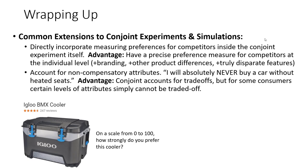Another common extension is accounting for what are called non-compensatory attributes. A common example: 'I will never buy a car without heated seats.' If somebody receives a non-heated seat version of the car, it literally doesn't matter what other combination of features is presented — they are simply not willing to make a trade-off. Non-compensatory attributes exist throughout the marketing space, and conjoint studies, though not the InGenius version, can absolutely account for them.